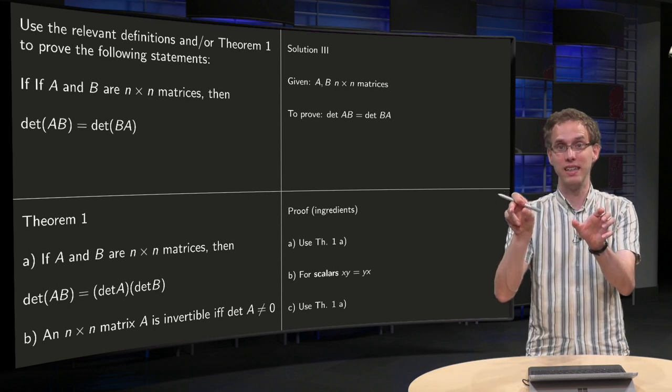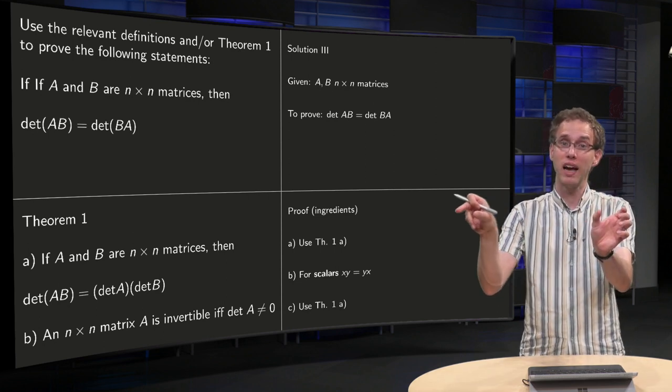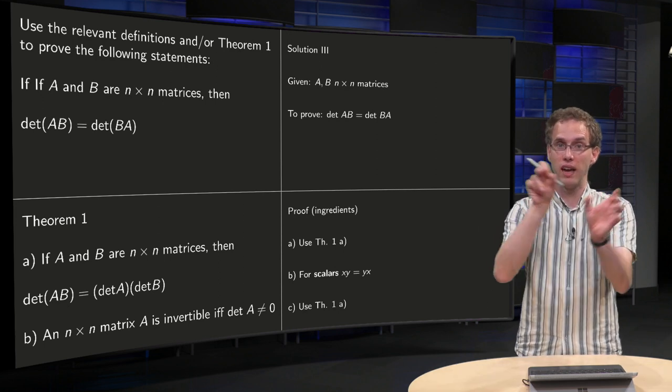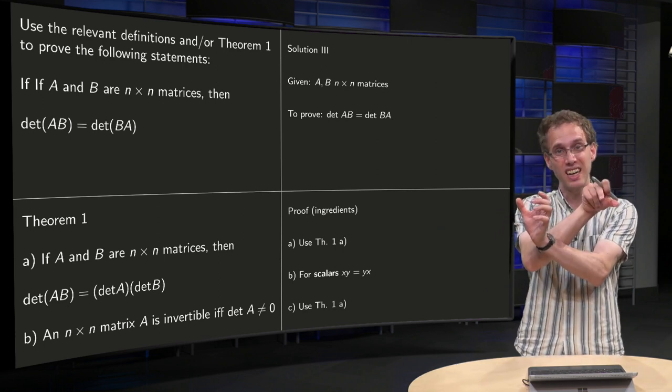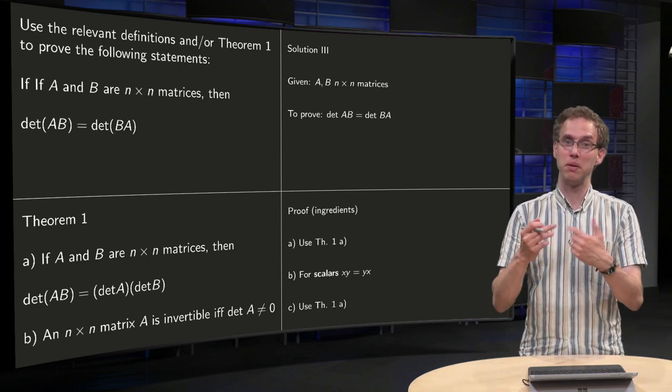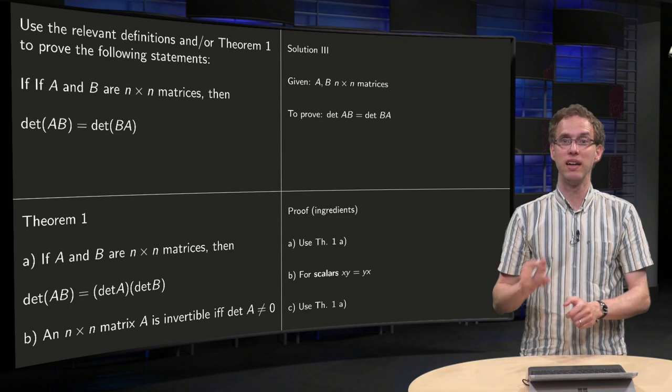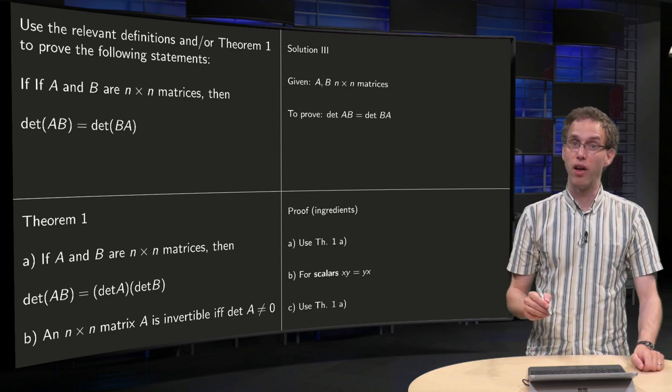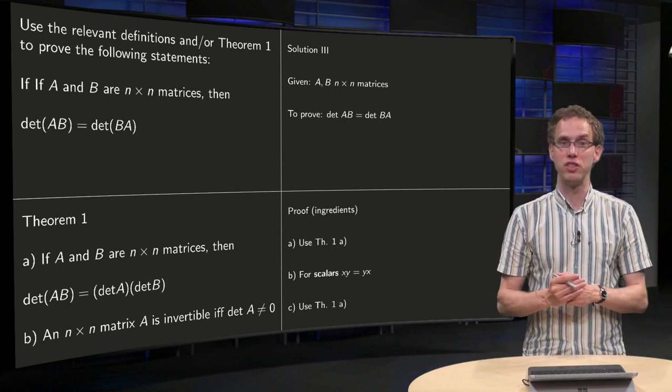So second ingredient: for scalars you can invert the order. So det(A) times det(B) equals det(B) times det(A). That's the second ingredient. And then you use the theorem again. You turn det(B) times det(A) into det(BA). So that's the third ingredient needed to prove the statement.